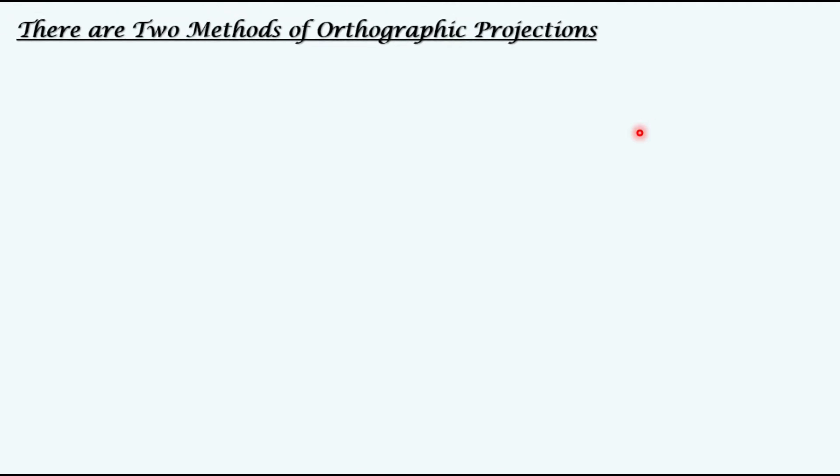There are two methods of orthographic projections. The first one is the first angle projection method and the second is the third angle projection method.